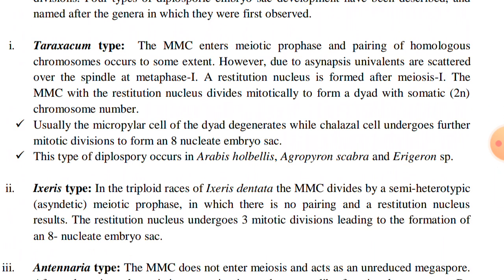The megaspore mother cell enters meiotic prophase and pairing of homologous chromosomes occurs to some extent. However, due to asynapsis, univalents are scattered over the spindle at metaphase I. A restitution nucleus is formed after meiosis I. The megaspore mother cell with the restitution nucleus divides mitotically to form a dyad with somatic chromosome number. A restitution nucleus means a nucleus having double the number of chromosomes — that is, a nucleus where chromosome number gets doubled.